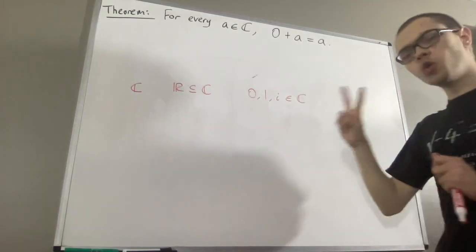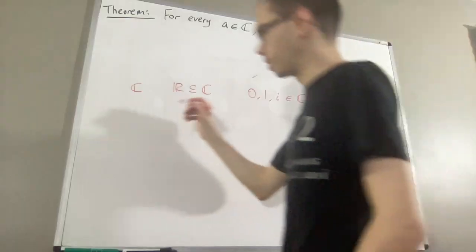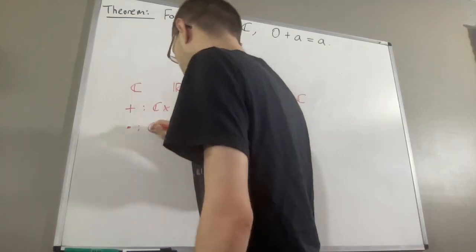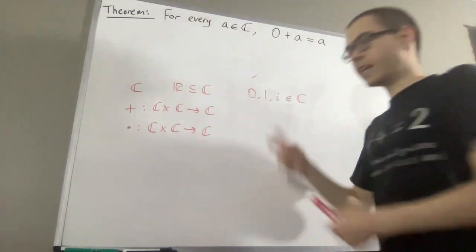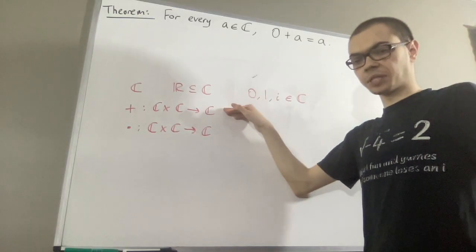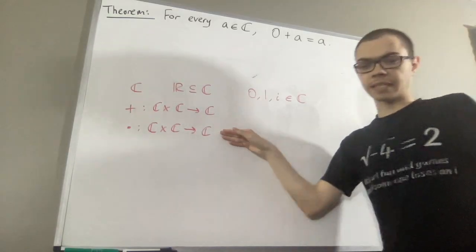We're given two binary operations on the complex numbers, addition and multiplication. So, given any two complex numbers a and b, a plus b is a complex number and a times b is a complex number.